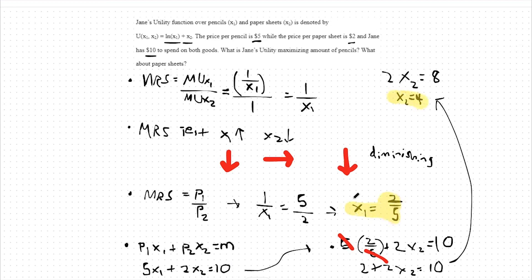These would be our answers. Optimally, we should purchase 2 fifths of a unit of x1 and 4 units of x2.